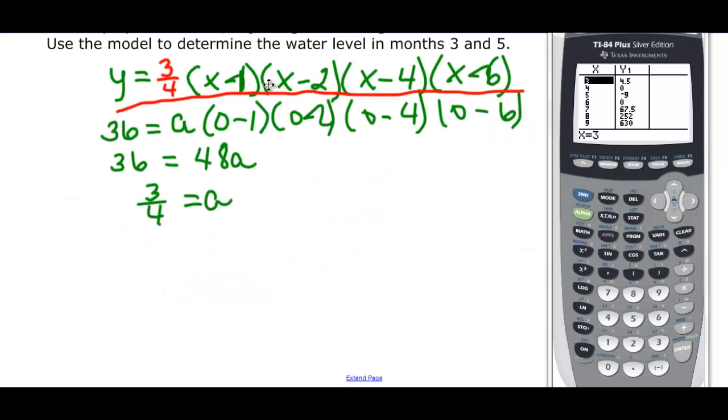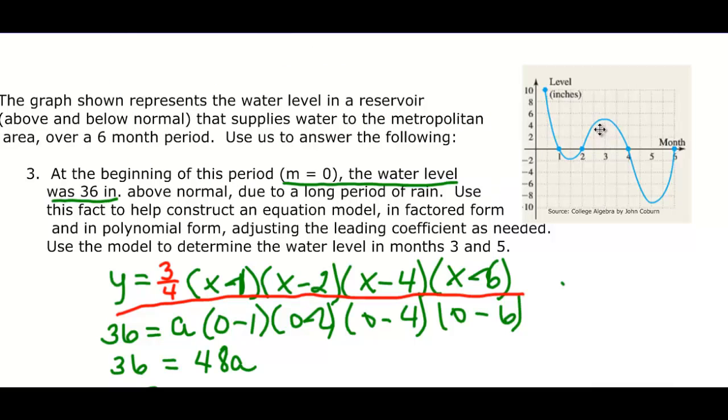Now to answer the question, use the model to determine the water level in months three and five. We can plug and chug three and five, but to be a little quicker I'm just going to come to my calculator. I've already put in this equation into y equals. At three months it was 4.5 and at five months it was negative 9. If we go back up and look at the graph, you can see that 4.5 would make sense here and negative 9 would make sense at five months.